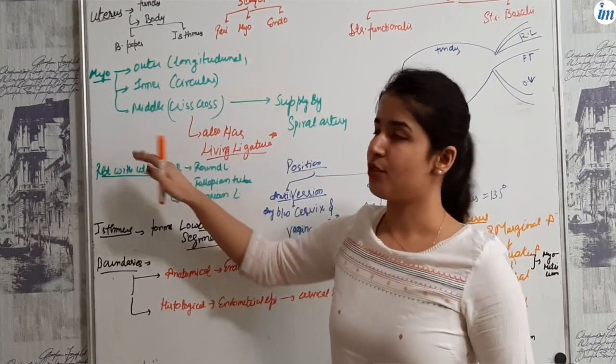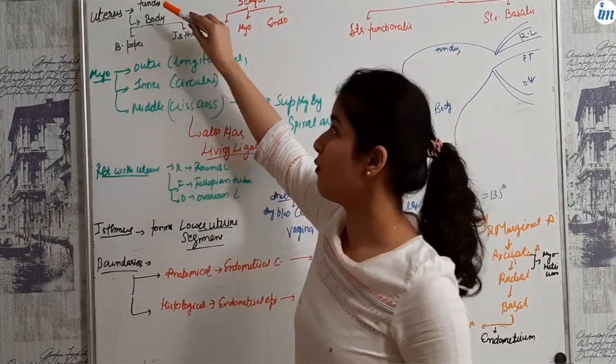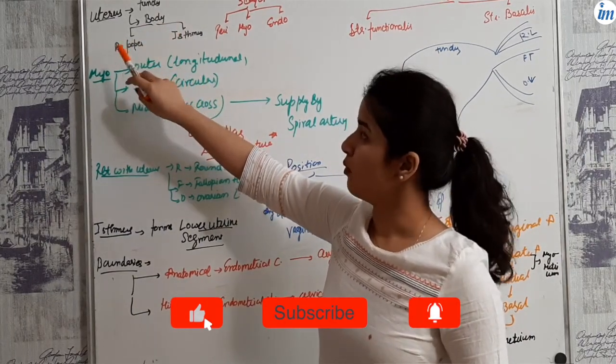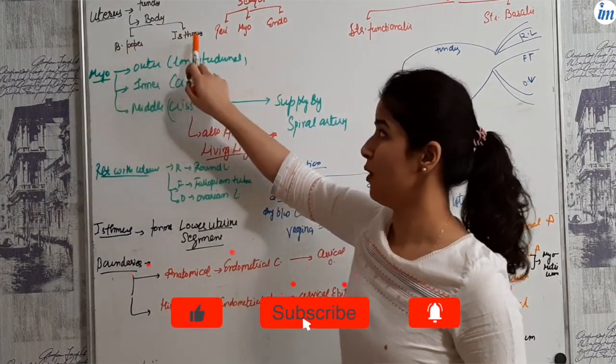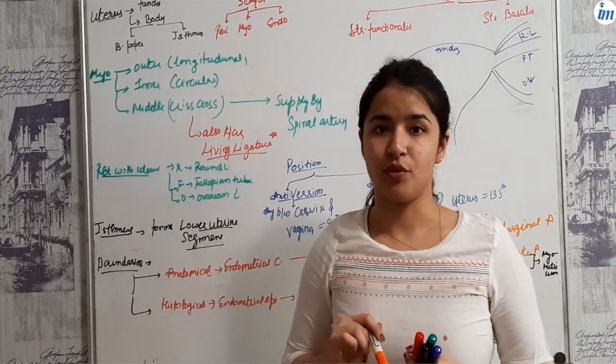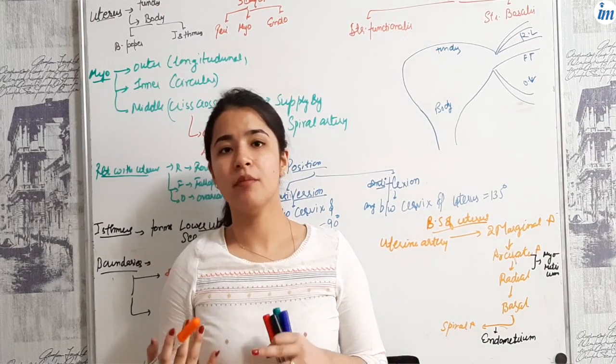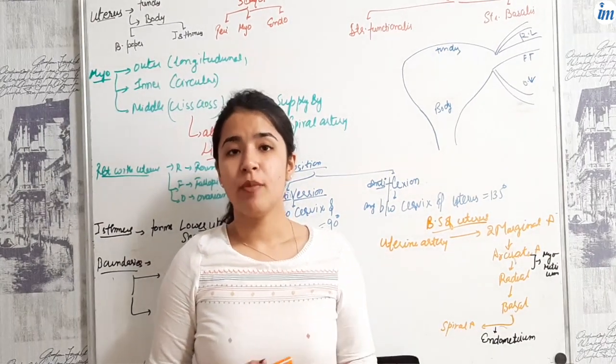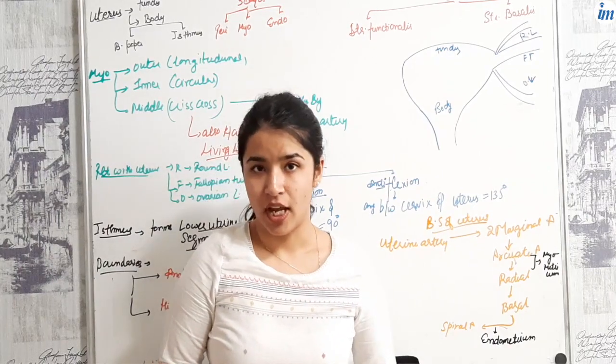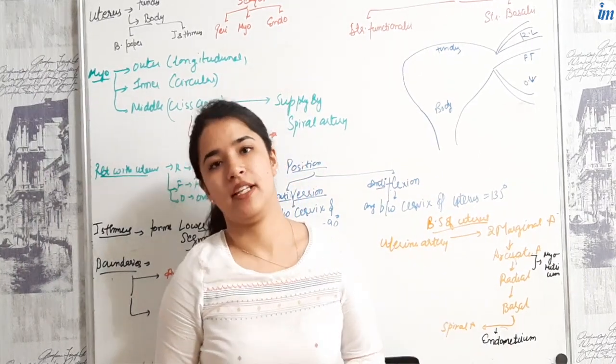The uterus has the fundus and body. The body is divided into two parts: the body proper and the isthmus. There are three layers present in the uterus: endometrium, perimetrium, and myometrium. The endometrium is of two types: stratum functionalis and stratum basalis.